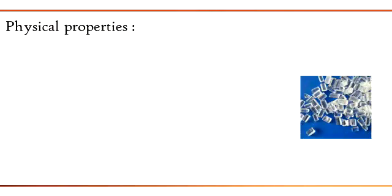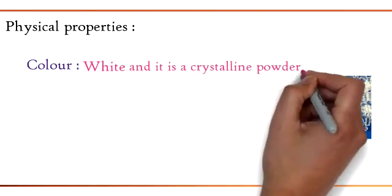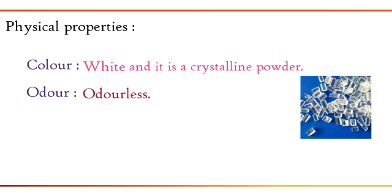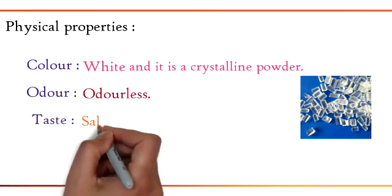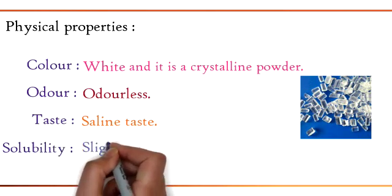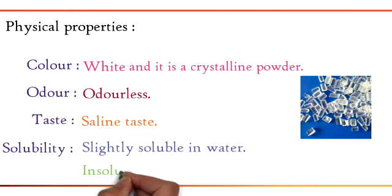Moving on to the physical properties. Color: the color of sodium thiosulfate is white and it is a crystalline powder. Odor: it is odorless. Taste: saline taste. Solubility: slightly soluble in water, insoluble in alcohol.